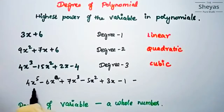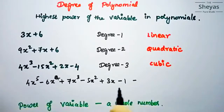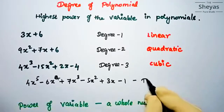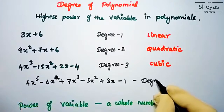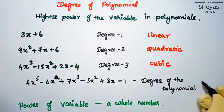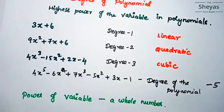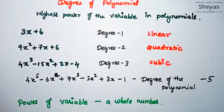Let us discuss one more problem: 4x⁵ − 6x⁴ + 7x³ − 5x² + 3x − 1. The variable is x and the highest power of the variable is 5, so the degree of this polynomial is 5. Always keep in mind that the power of the variable will be a whole number — the degree of the variable will always be a whole number. If you have any doubt, you can post it in the comment box, and let us solve some problems under polynomials in the next video. Thank you.